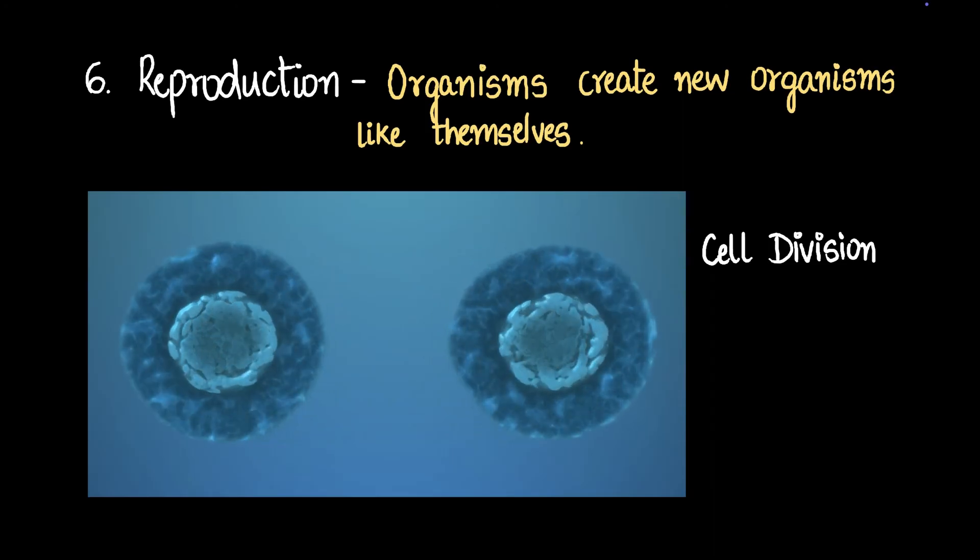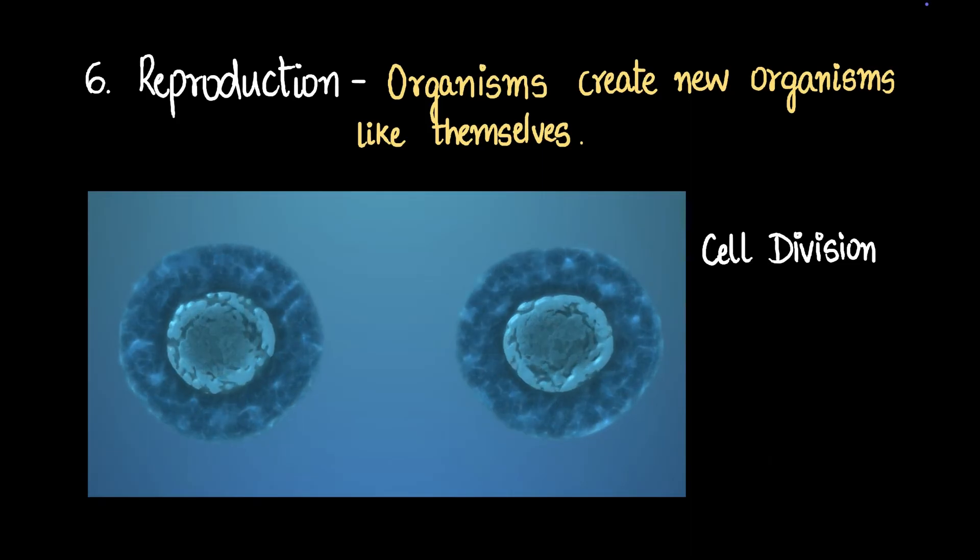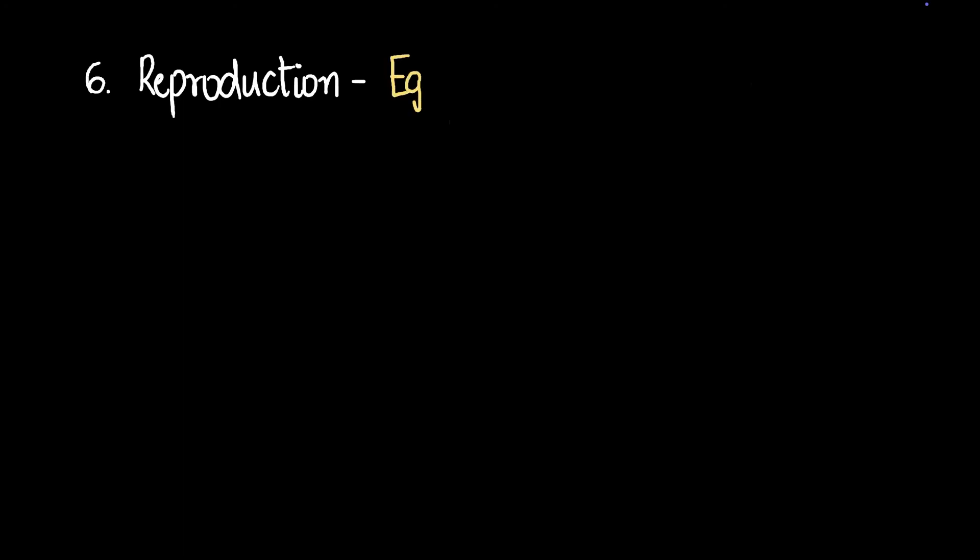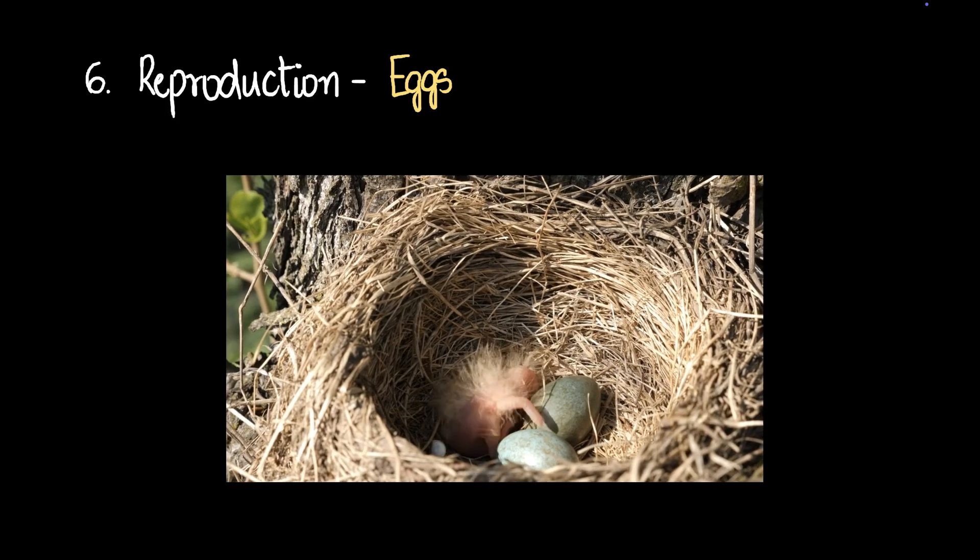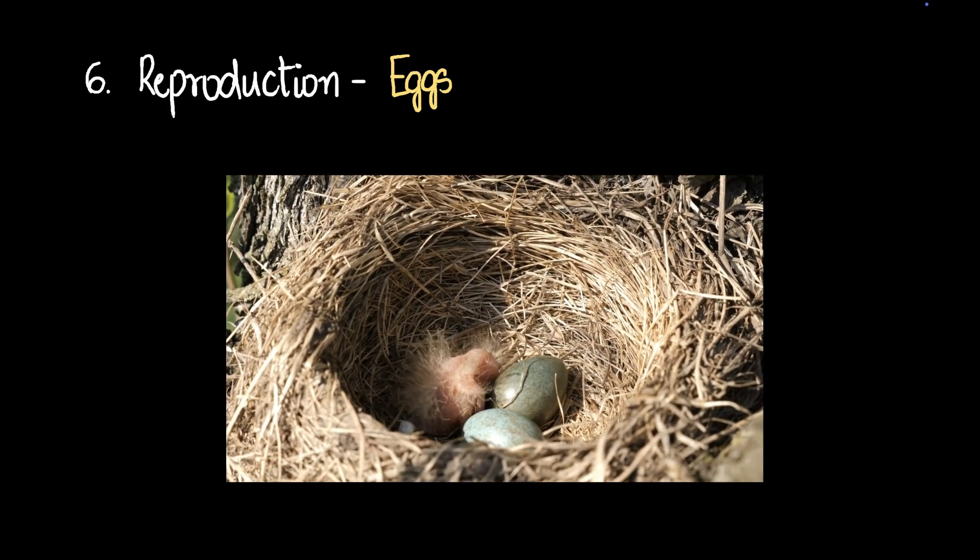Now this is an animation, this is not a video, but it's pretty amusing. How a cell can just split into two. You can see this kind of reproduction in things like amoeba. Those reproduce like this. What about other organisms? Let's look at a few more examples. Some organisms reproduce by producing eggs like birds. Here in this video you can see a small bird just hatched out of the egg.